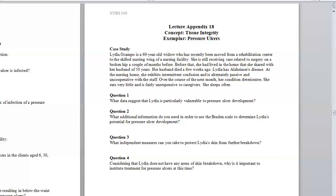And before that, she had lived in the home that she shared with her husband of 50 years. He died a few weeks ago. Lydia has Alzheimer's disease at the nursing home. She exhibits intermittent confusion and is alternately passive and uncooperative with the staff. And over the course of the next month, her condition has deteriorated. She eats very little and is fairly unresponsive to caregivers. She sleeps often.